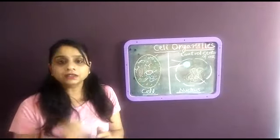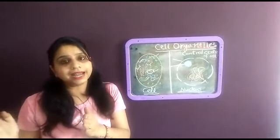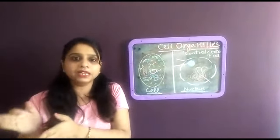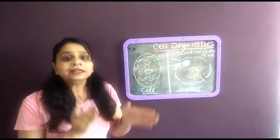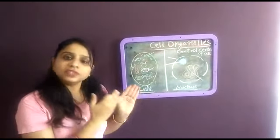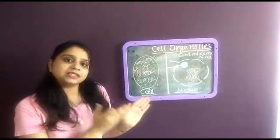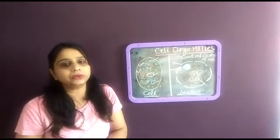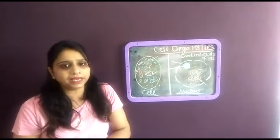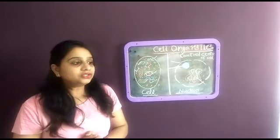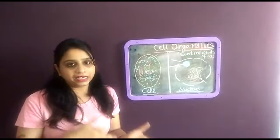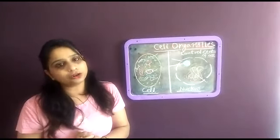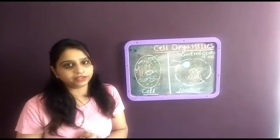So cell is like the brick of a home. Like a home is made up of many bricks, in the same way the body is made up of cells. So cell is the structural as well as functional unit of any living being. Cell is the structural and functional unit of animals and plants also because we both are living beings.